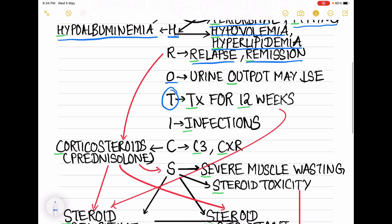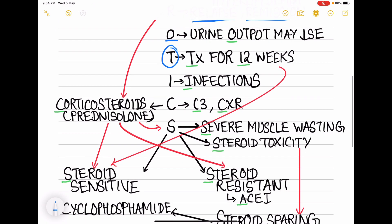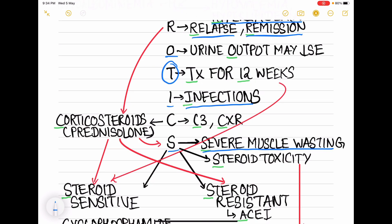We will leave T for now. Basically T is for treatment, so we will go to I - that is, in case of nephrotic syndrome there will be infections also. S stands for severe muscle wasting which will become evident after the edema subsides.